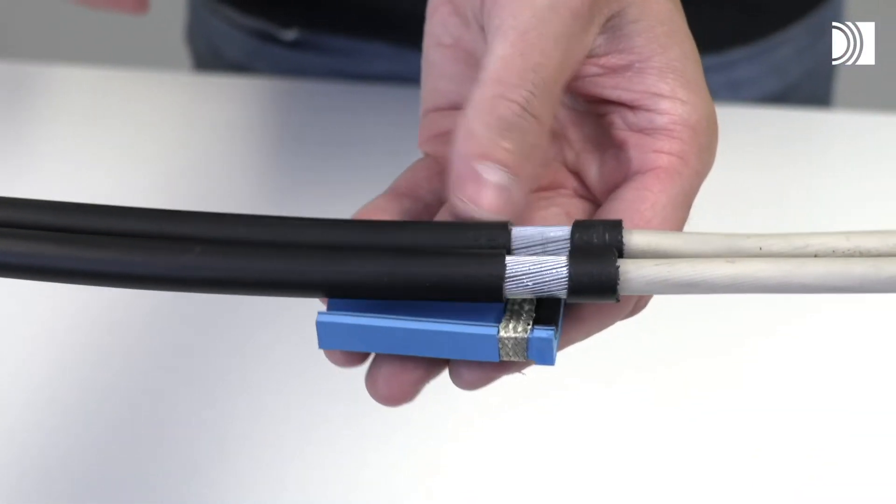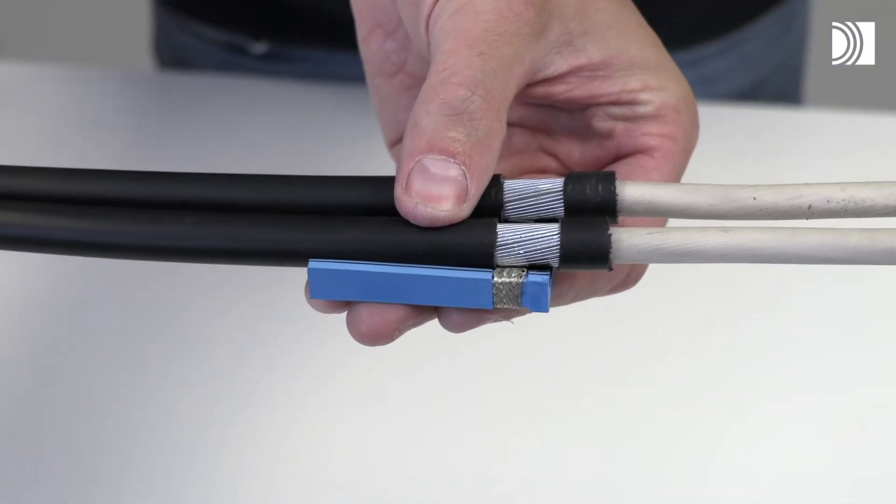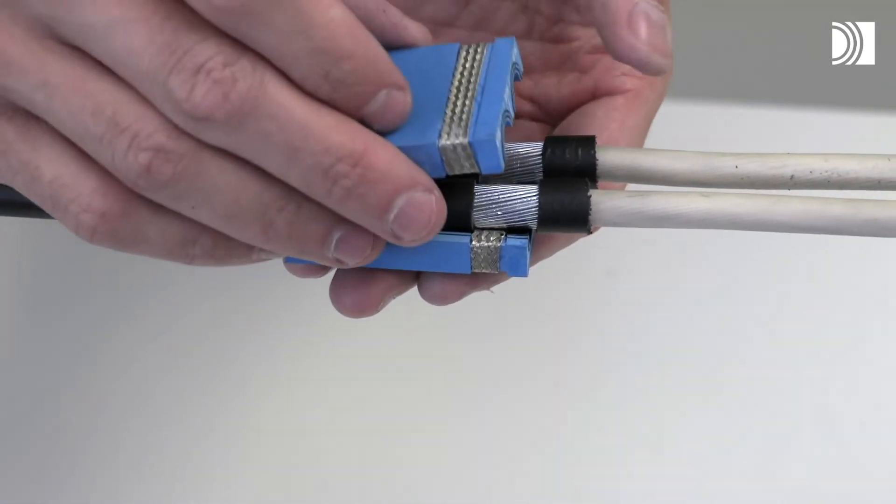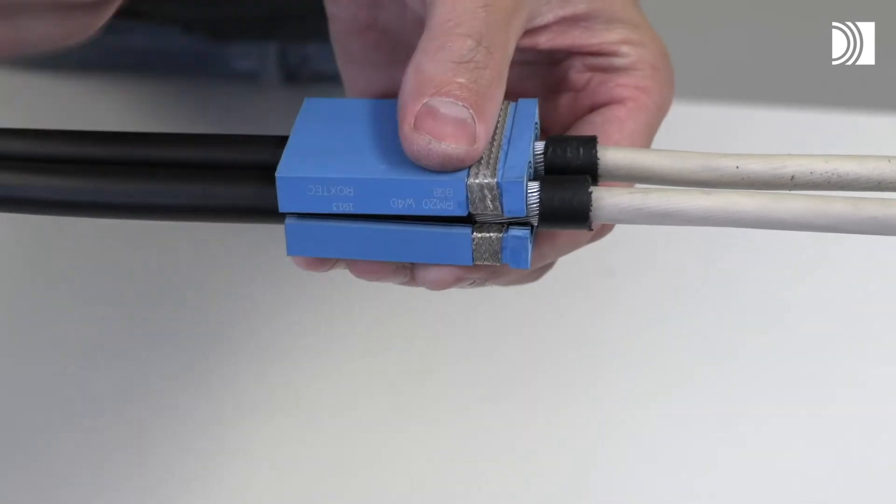Note that the armored cables are correctly prepared when a part of the jacket is removed, the cut matches the braid section of the module, and the armor extends beyond the edge of the module.